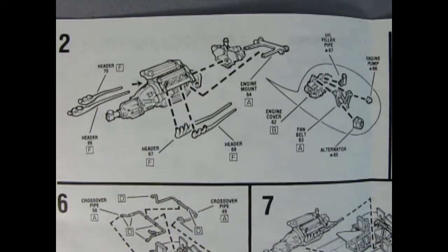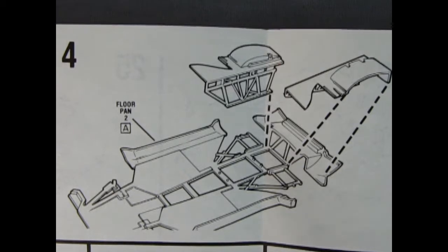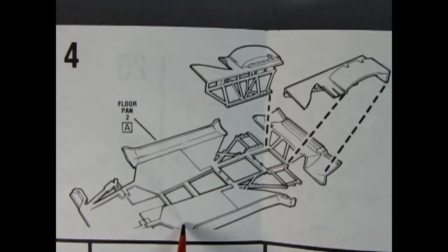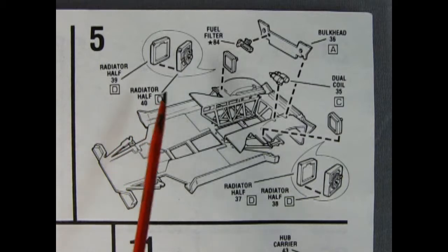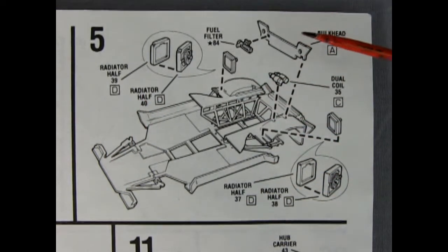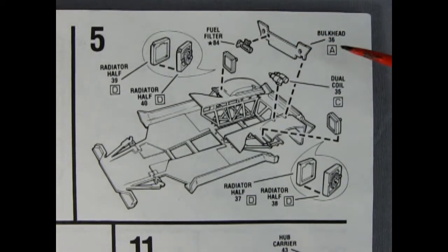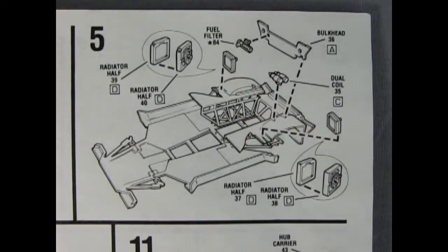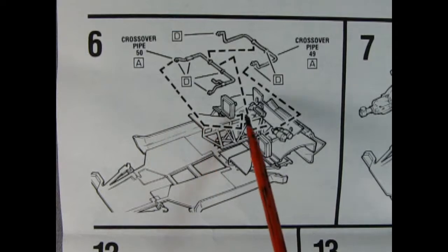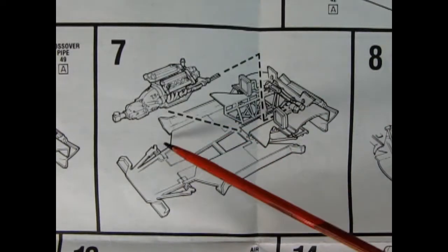Image three shows our wheel wells and the front suspension members. Panel four shows those components mounting up onto the floor pan. Panel five shows our two-piece radiator gluing together, and that will drop in back here because this is a rear engine car. We've got our bulkhead, fuel filter, dual coils, and another radiator over here, so twin radiators, one on each side.